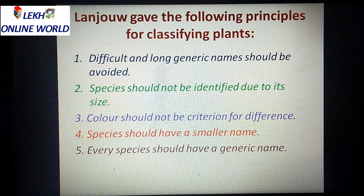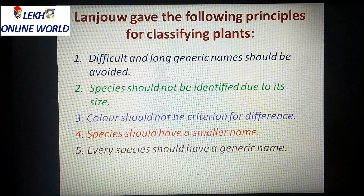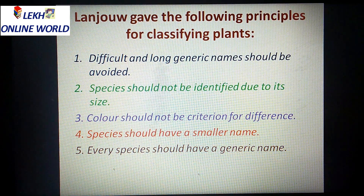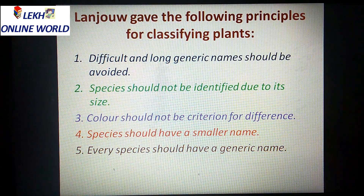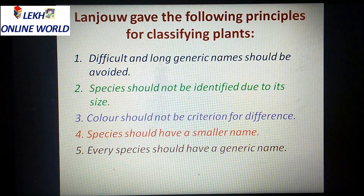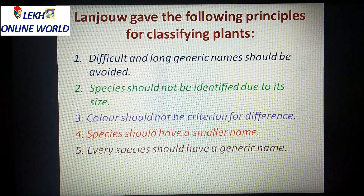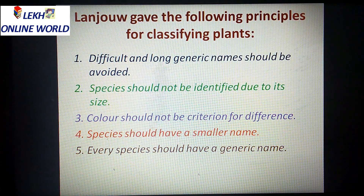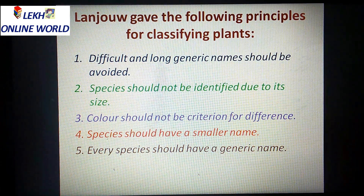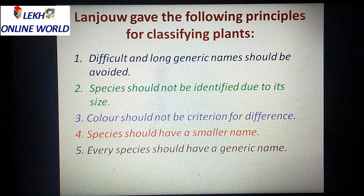Lenzao gave some principles mainly for plants — how plants would be classified and how their naming would be done. The first principle states that difficult and long generic names should be avoided.